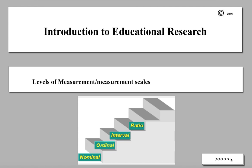Welcome to an introduction to educational research. Today's video deals with levels of measurement or measurement scales. If we're conducting research, generally we are collecting some type of data on different kinds of variables, which means we may be gathering numbers. But not all numbers are the same, and to be intelligent researchers and producers of research and to be able to read and understand research, we need to be aware of these differences in how numbers are collected.